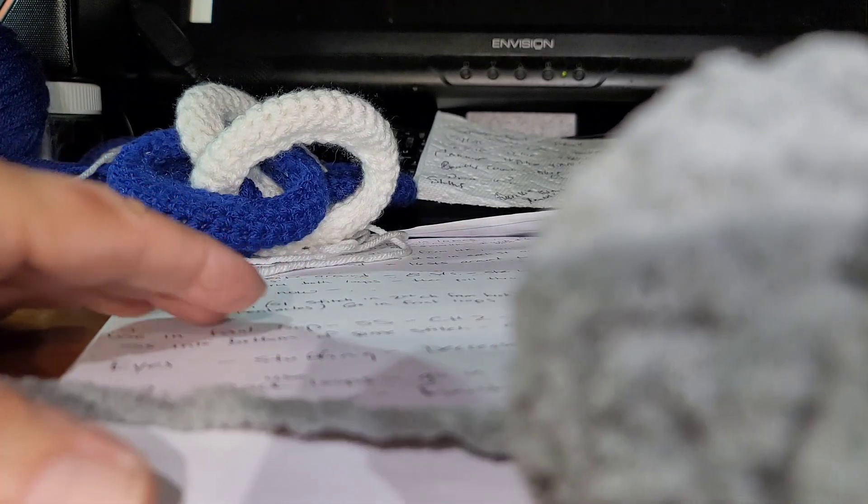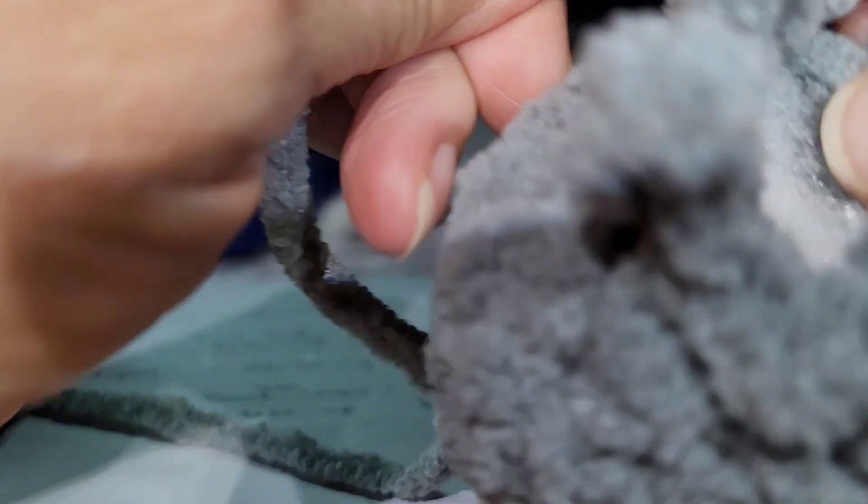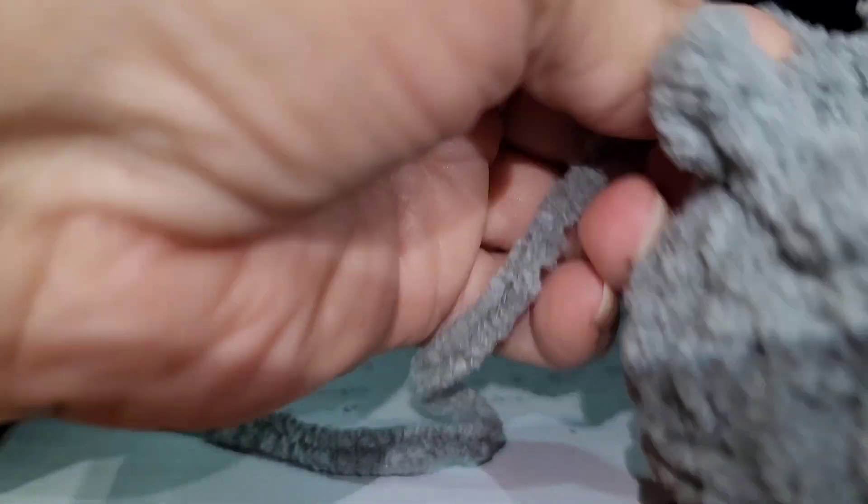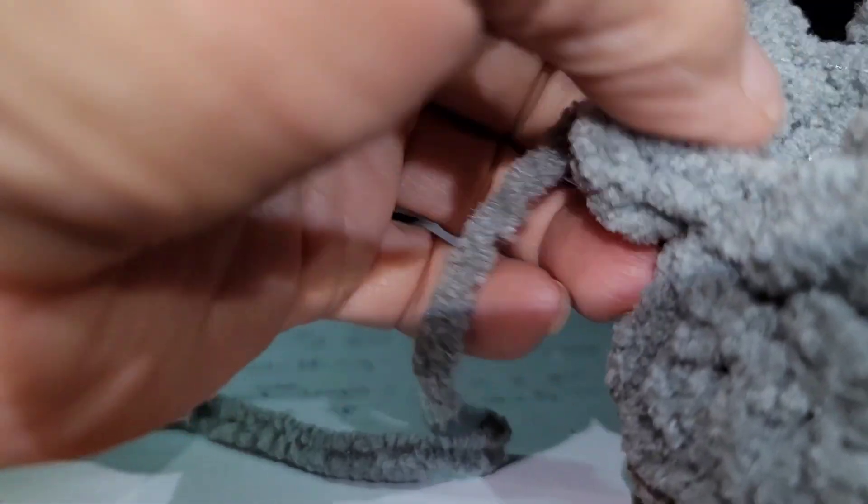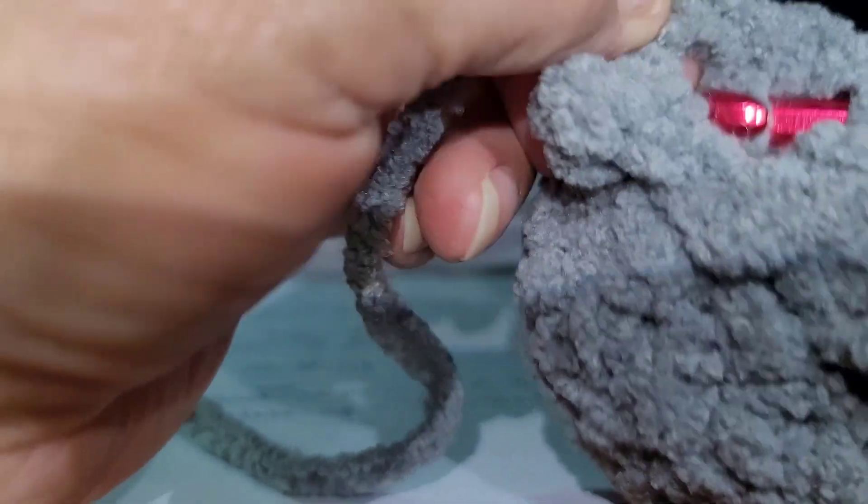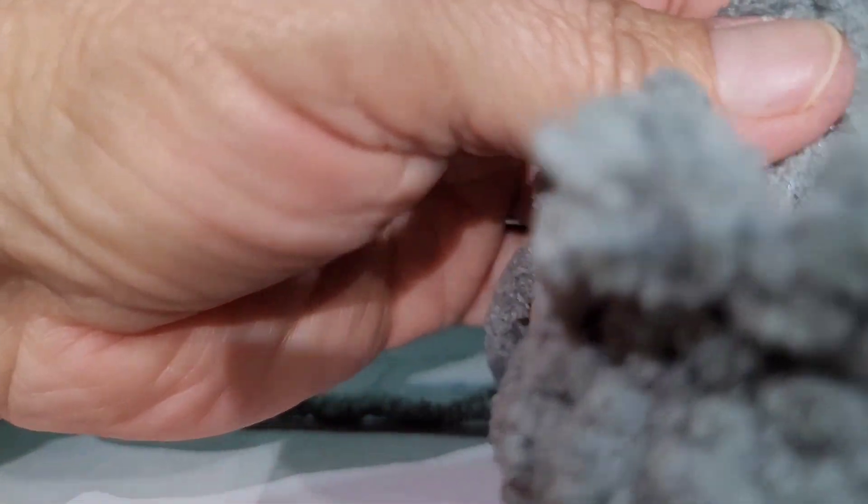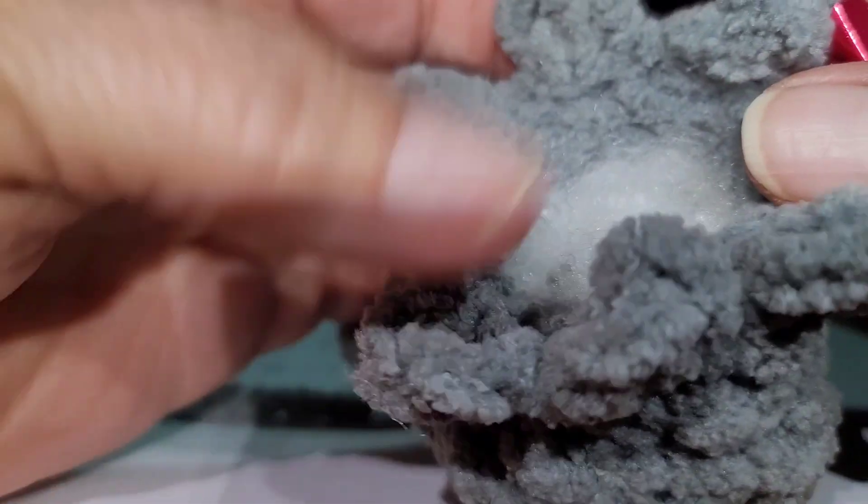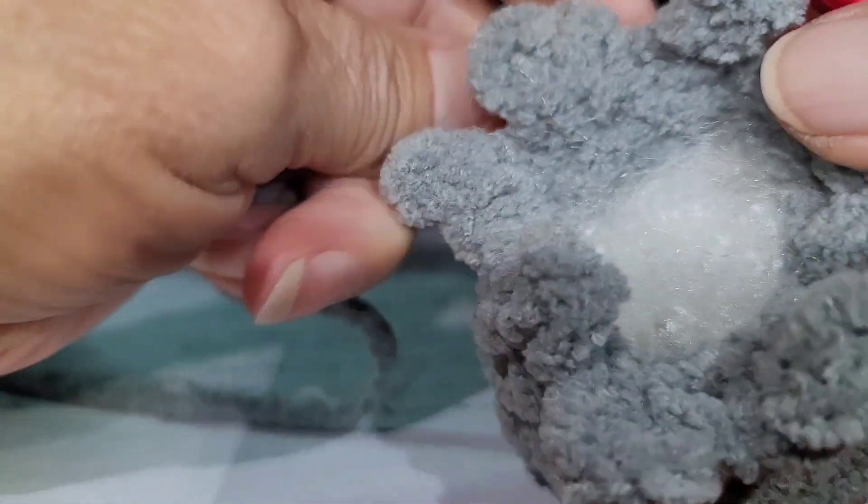That's using the back loops this time. So you end up here, you got to go back under this little tentacle, find the back loop. So it's that decrease again when you're closing up the hole. I think it's going to be hard for you to understand.